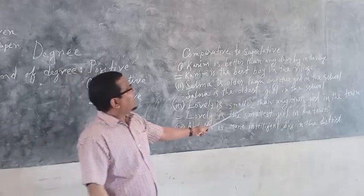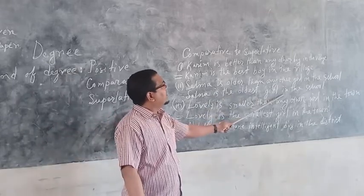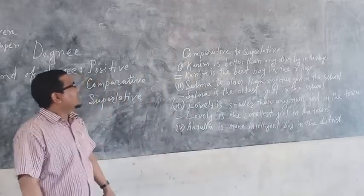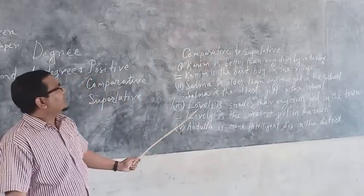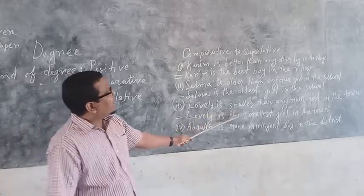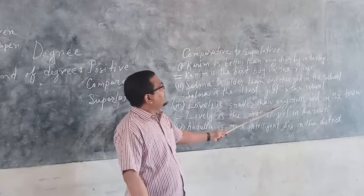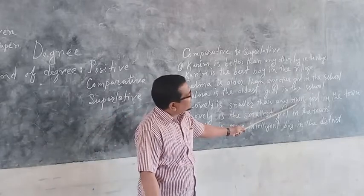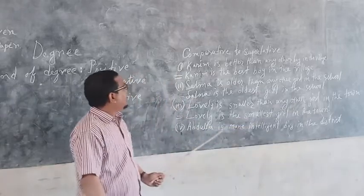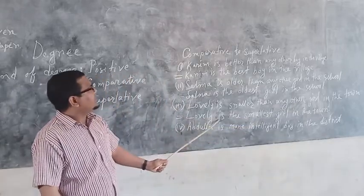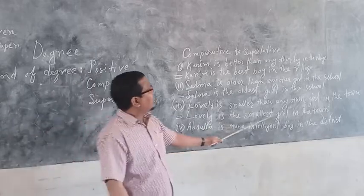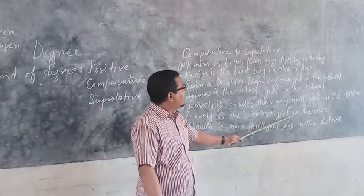No sense of subject, Sarva is the oldest girl in the school. Other sentence, look at the blackboard. Labri is smaller than any other girl in the town. Labri is the smallest girl in the town.